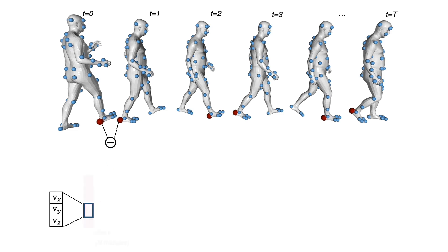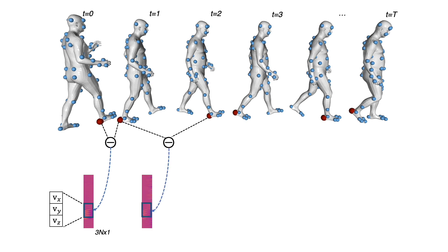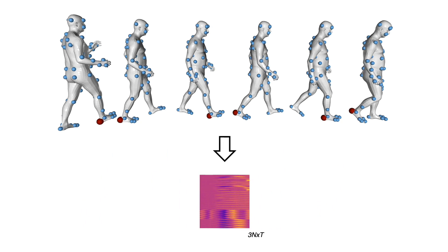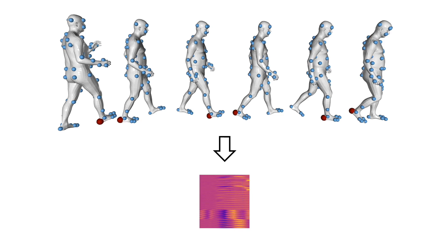We concatenate the velocities for all markers of the current frame into a 1D vector as body representation. By computing the body marker velocities for all frames, we concatenate the 1D velocity representation of all frames into a 2D feature map, where each row denotes the x, y, or z velocity of a body marker, and each column denotes a specific frame. This 2D feature map serves as our motion representation.